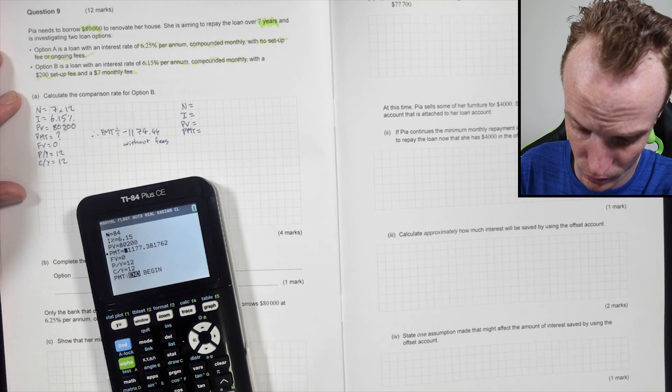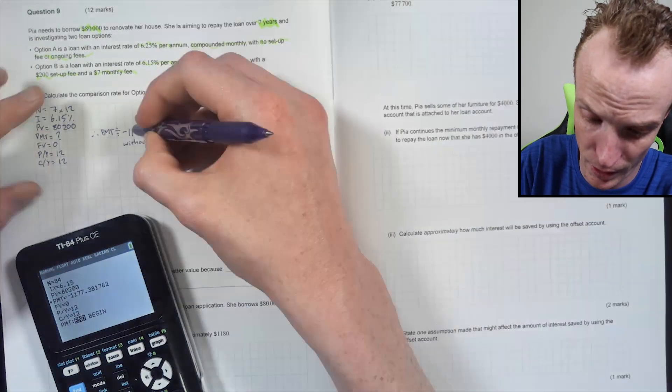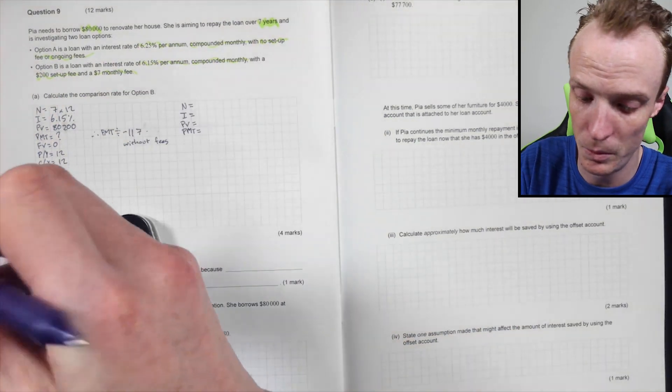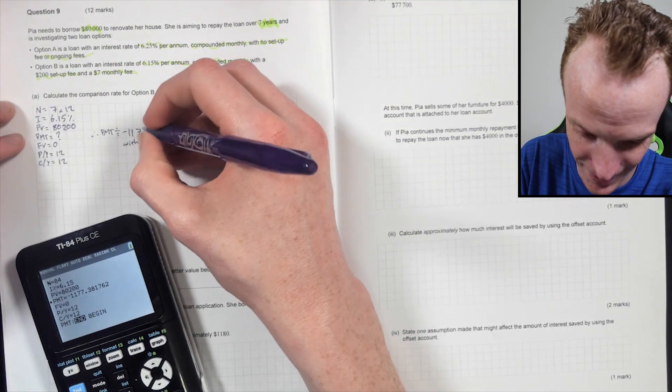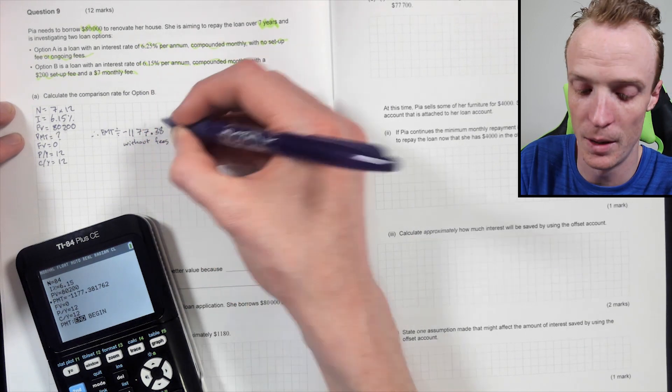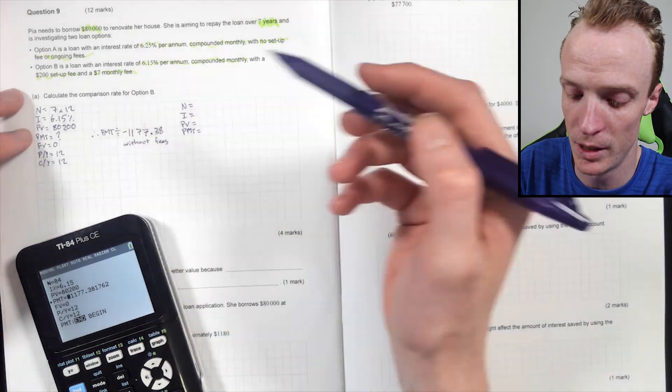1,177.38. Bunch of erasable pen. 1,177.38. So step one, add the fees to it and then calculate the PMT.